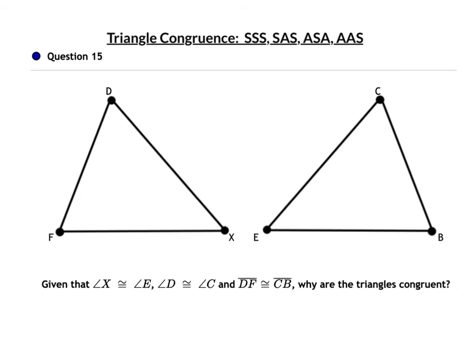For question 15, we have angle X congruent to angle E, angle D congruent to angle C, and DF congruent to CB. Make sure you're paying close attention to the order — we have Angle-Angle-Side.